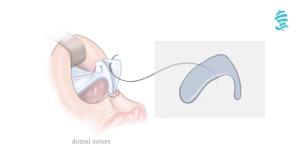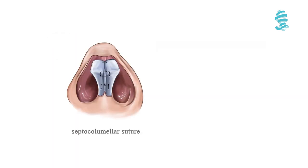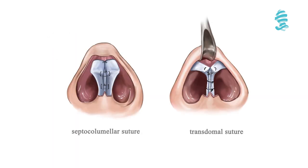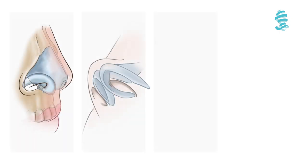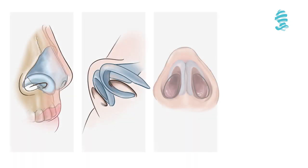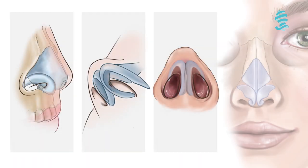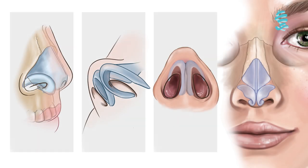Common tip suture types include the domal suture, septocolumellar suture, and transdomal suture. Tip grafts are used to support or refine the tip and to increase tip projection; these include the columellar strut, alar rim graft, tip graft, and lateral crural grafts.